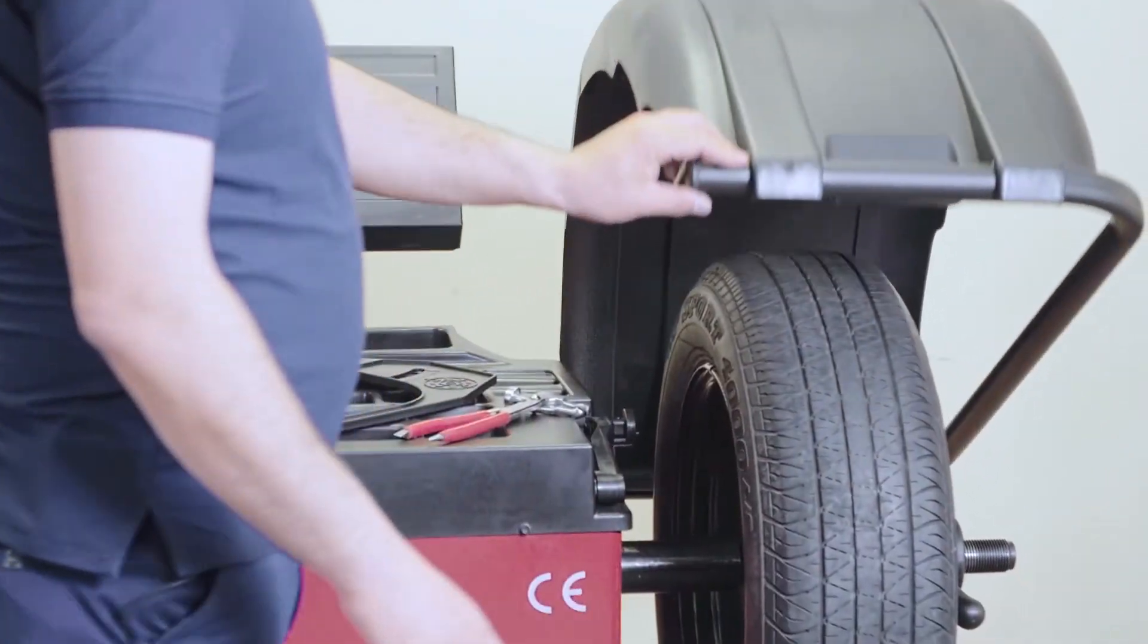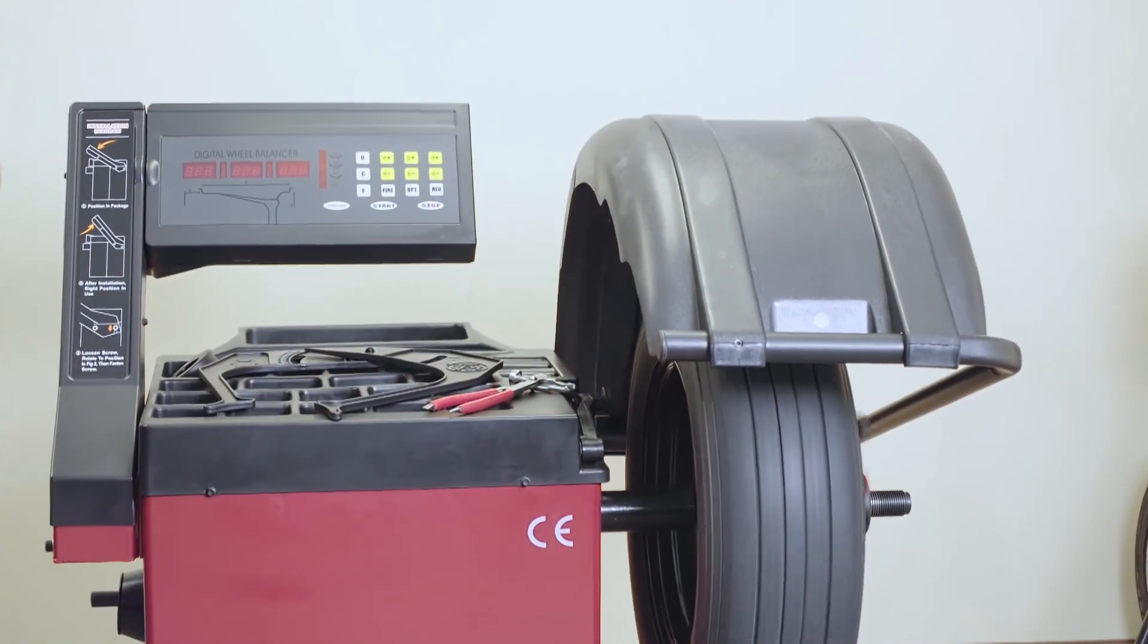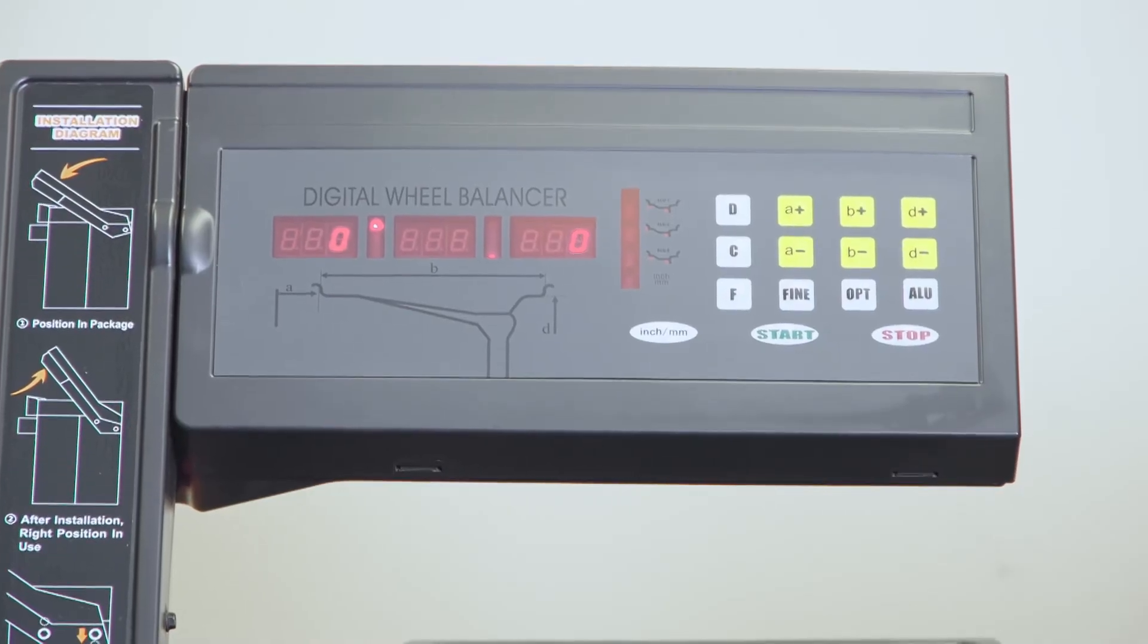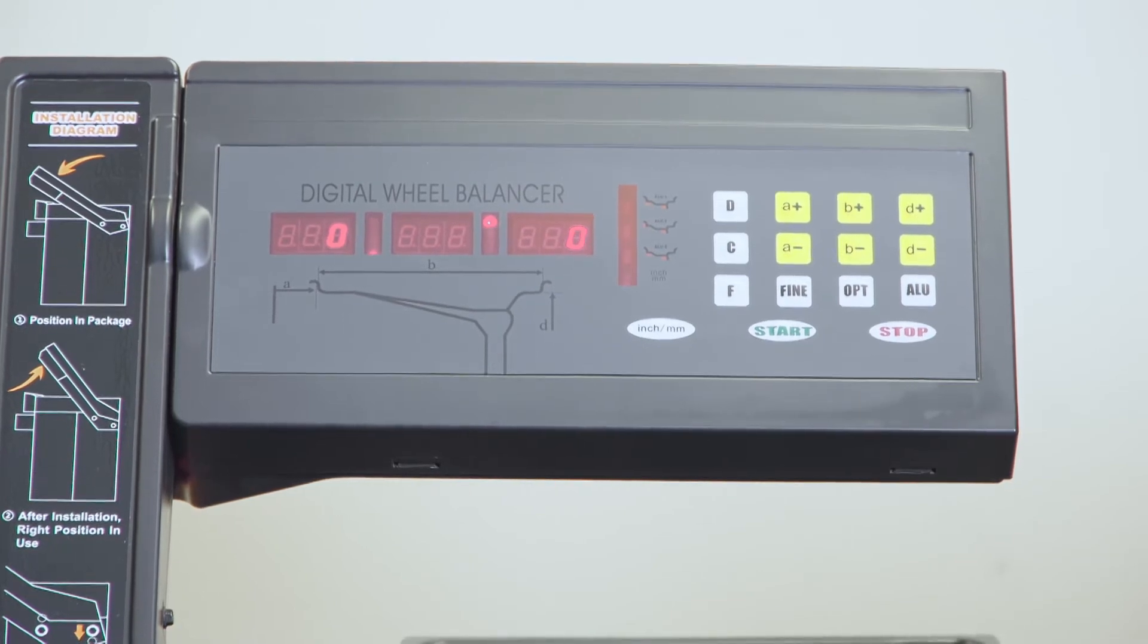Then one ounce on the inside at 12 o'clock. Now we're going to spin the tire. And the wheel is balanced, 0-0 on the screen.